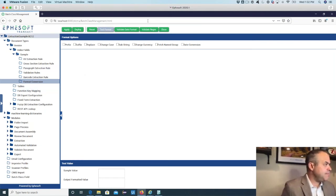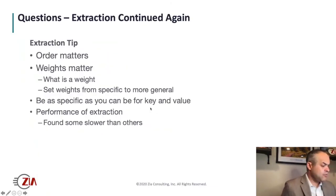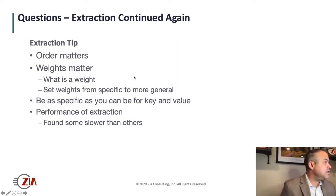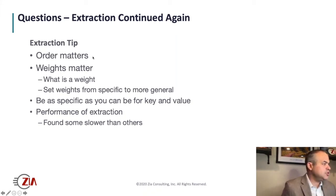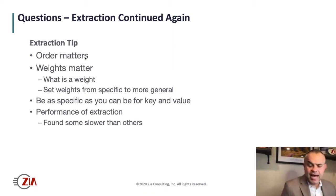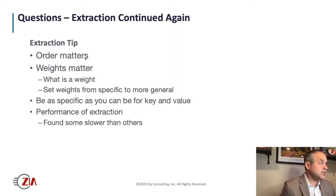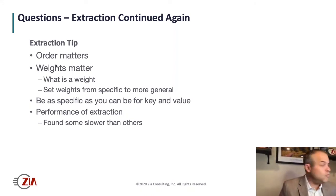Let's go back to the presentation and get into the first aspect of the tips and tricks. The first thing is: order matters. You can trump a value with another value. Look at what order you want to create your rules in — last is best, if you will. This applies across using different plugins: key-value, Ricostar, cross-section. If you're using all of those for a particular field extraction, make sure you know that one might be trumping another.